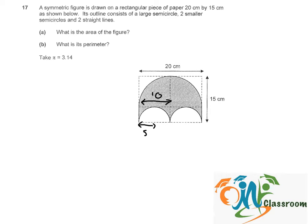To find the area of the figure, we can break it down to the area of the big semicircle plus the area of two shaded parts like this.